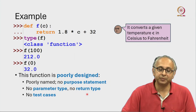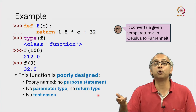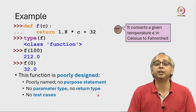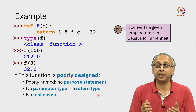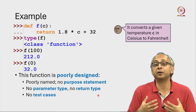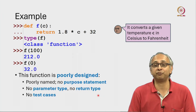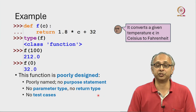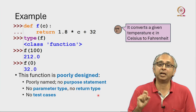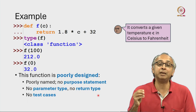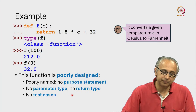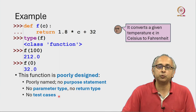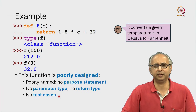Similarly, it would be helpful if the function told us what kind of data it was returning. People are going to use the results of our function for their calculations, and it will be helpful for them to know what type of data this function is returning.